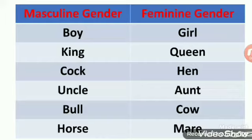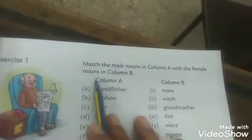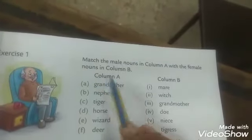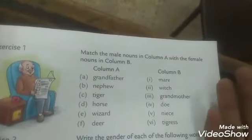I hope gender nouns are now clear to you. So let us begin the first exercise in the textbook on page number 47. Exercise number 1, page number 47: match the male nouns in column A with the female nouns in column B. Column A has masculine genders and column B has feminine genders. We just have to match them.